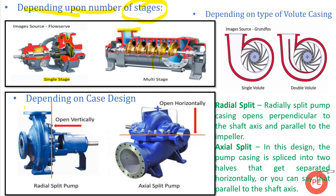Depending upon case design, we have radial split and axial split pumps — this depends on how the pump is opened. In a radial split pump, the casing opens perpendicular to the shaft axis and parallel to the impeller, like a front suction and top discharge pump. In an axial split pump, the casing is split into two halves along the axis — you can see the bolts — making it a side suction, side discharge pump.